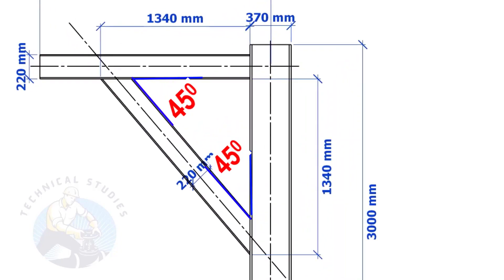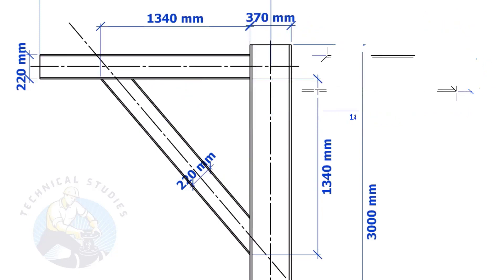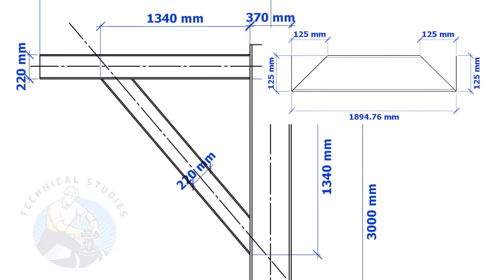Here, the size of the beam is 220 mm, then the cutback also will be 220 mm. Suppose the width of the bracing is 125 mm, then the cutback also will be 125 mm. Means, if the included angle is 45 degrees, the cutback will be the same as the bracing width.